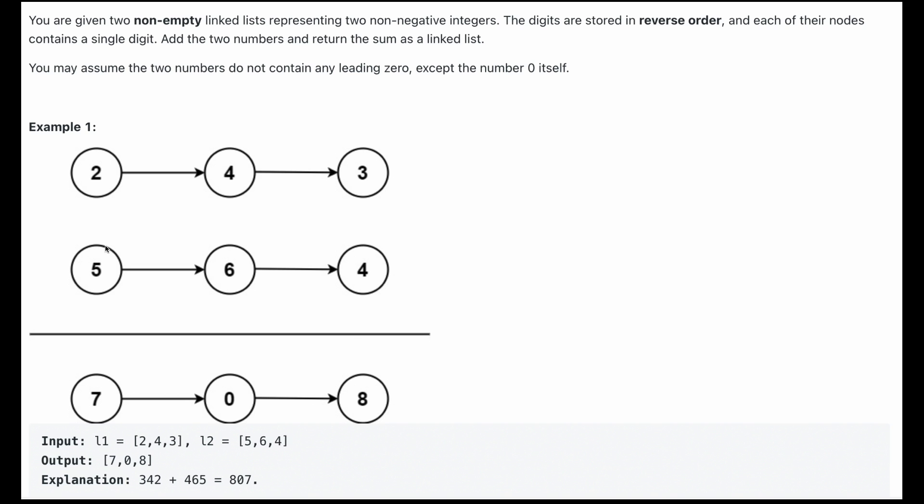Let's look at an example. If you were given this linked list 2-4-3 and linked list number two 5-6-4, when we add them we should expect, you know, 2 plus 5 is going to be 7.